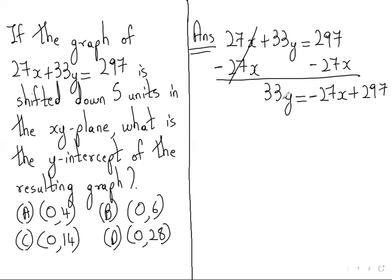Now we want only y and there is 33y here. So between 33 and y there is nothing, so it is in multiplication. We will divide by 33 on both sides.